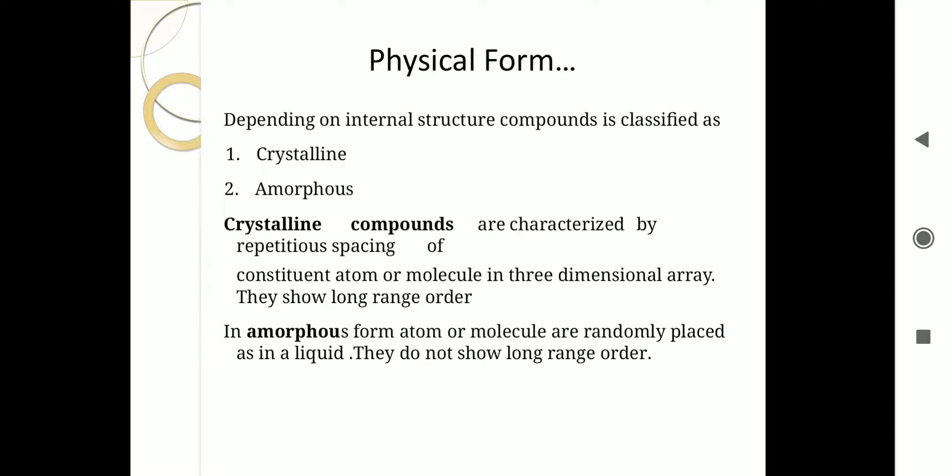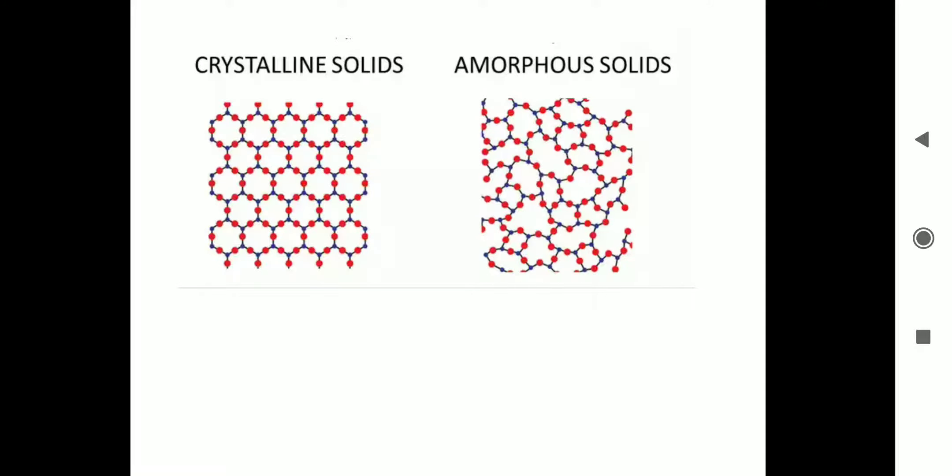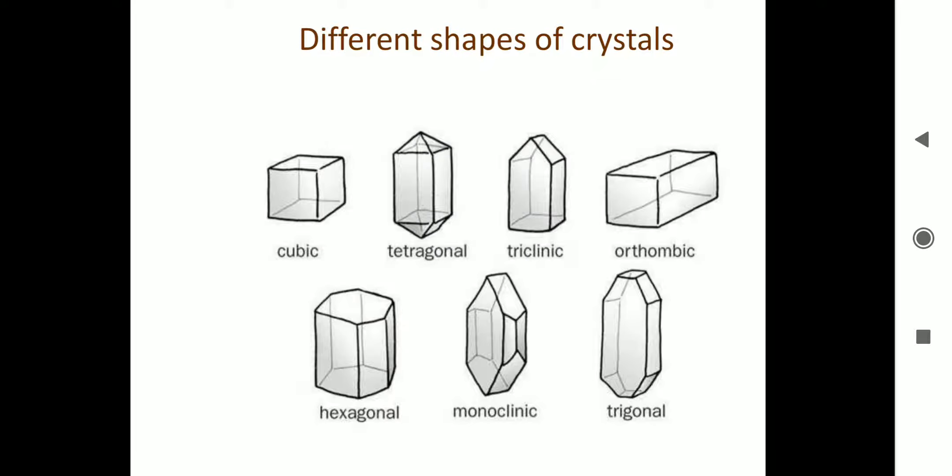In amorphous form, atoms or molecules are randomly placed, as in a liquid, and they do not show long range order. In the picture you can see, on the left are crystalline solids with repetition and arrangement. Whereas in amorphous, you can see that atoms or molecules are randomly placed. These are some of the different shapes of crystals you might have studied in physical pharmaceutics.